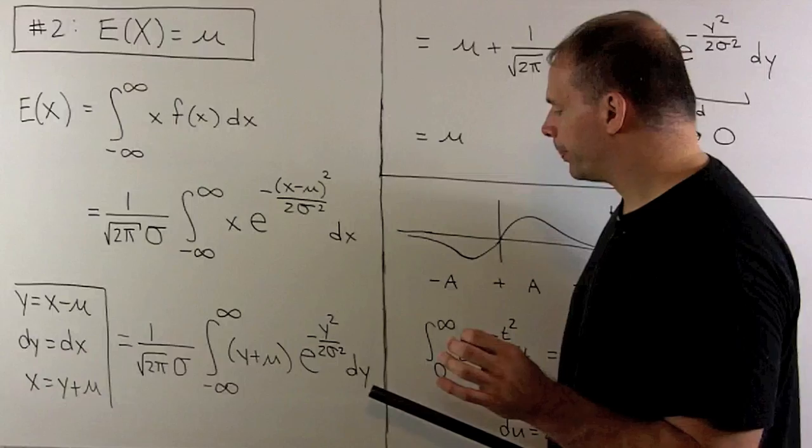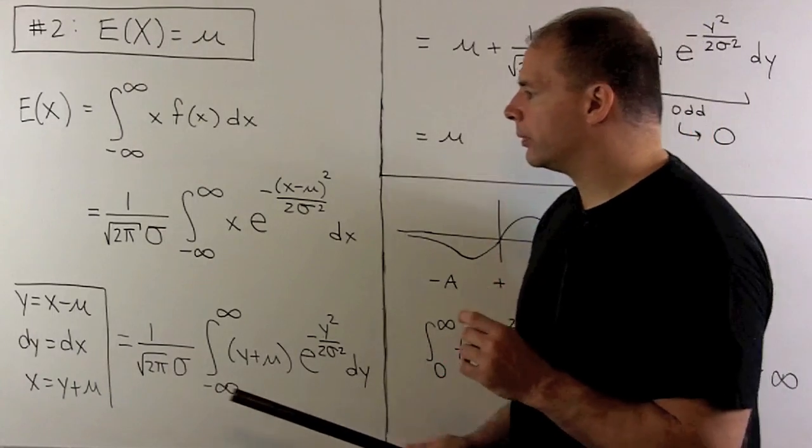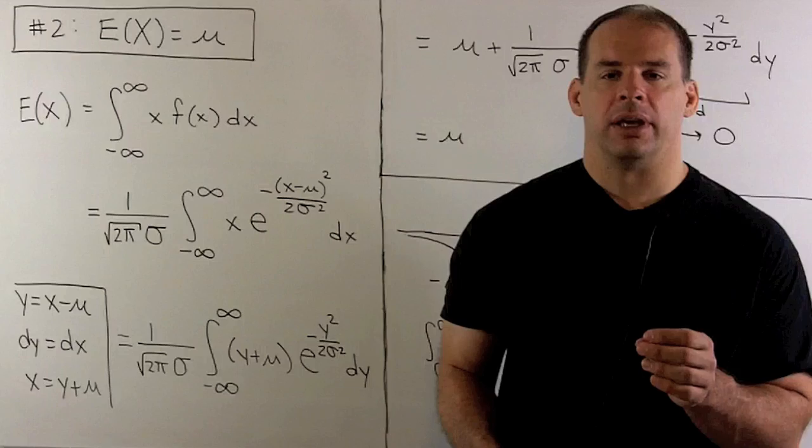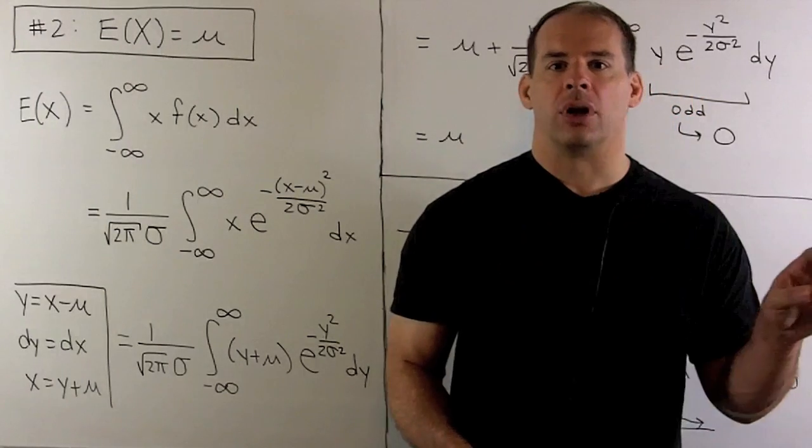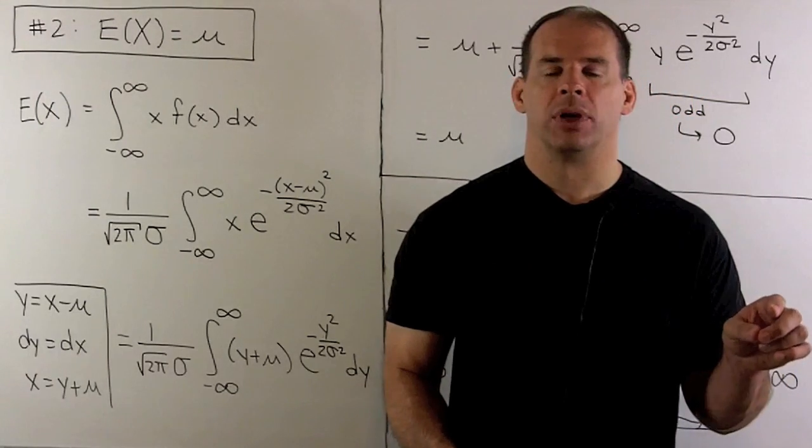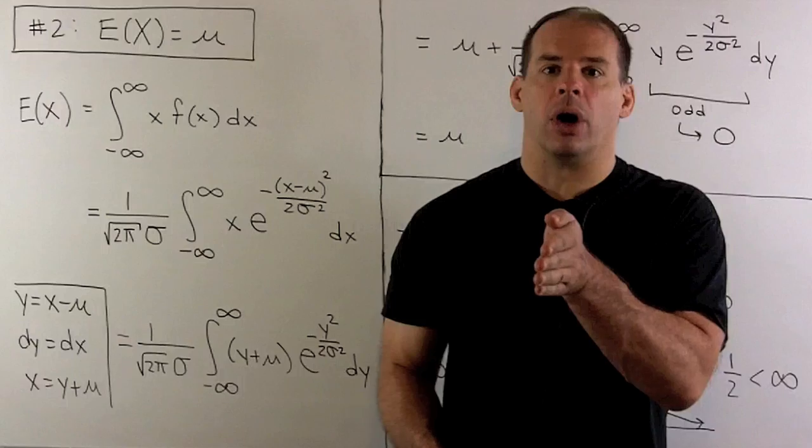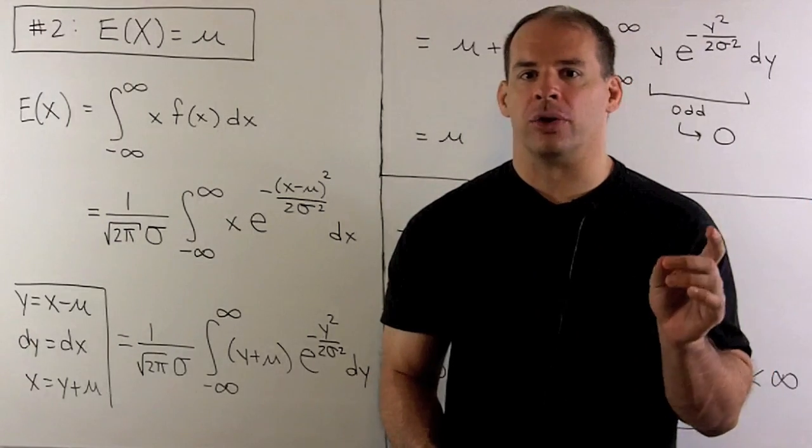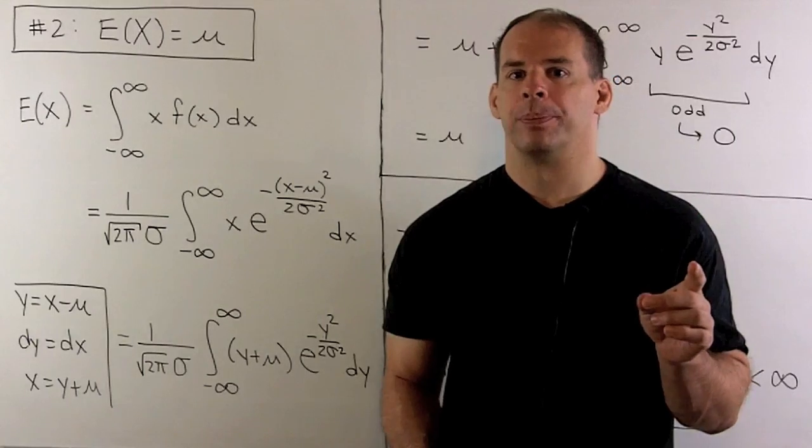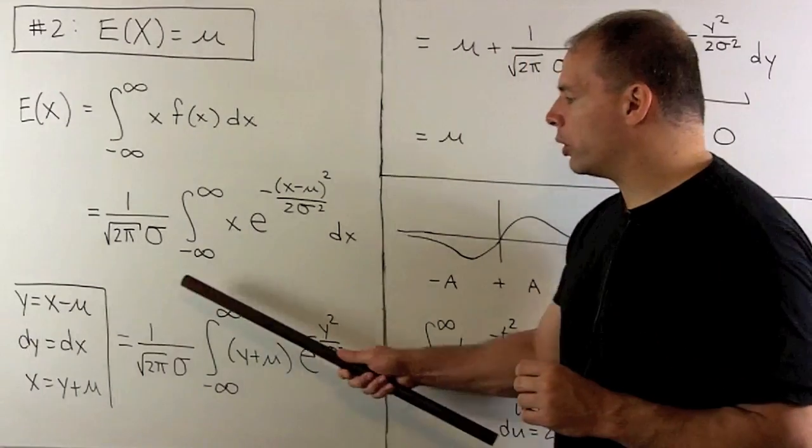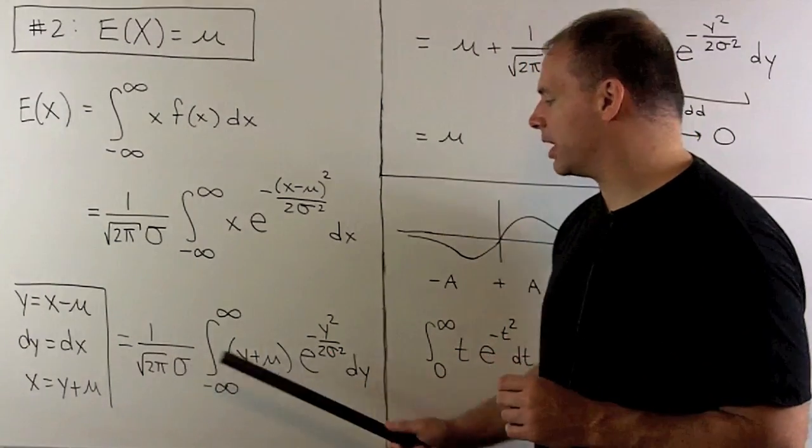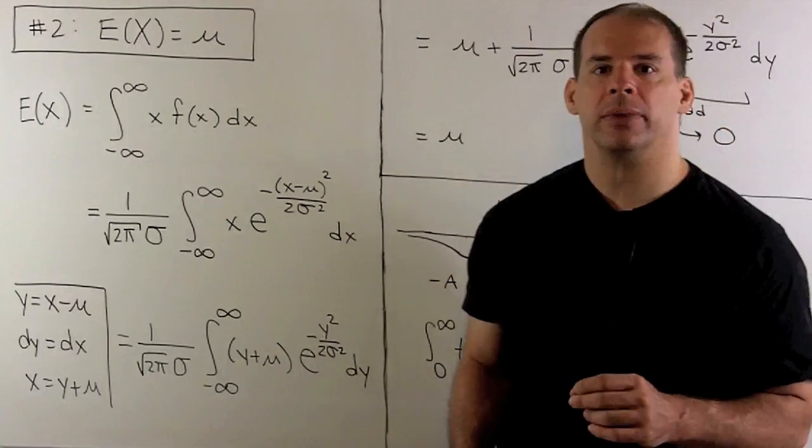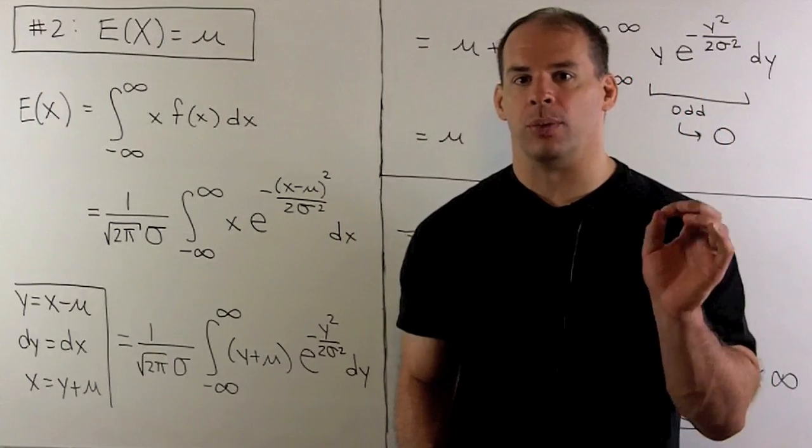We substitute. Then we note, our substitution to go to y. Well, here we're just taking the graph of our density function. We're moving μ to zero. So we're just shifting the graph over. That means the area under the graph doesn't change. It's still equal to one. Which means 1 over square root of 2π times σ times e to the minus y² over 2σ² is a probability density function in y.